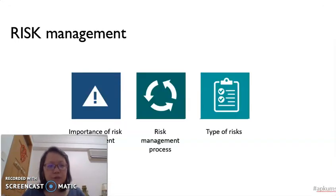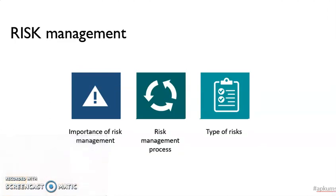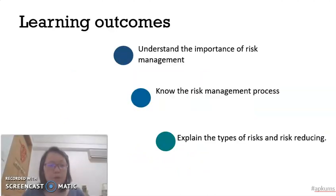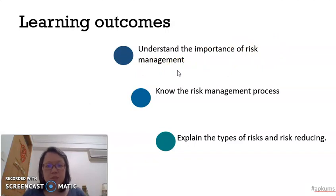I prepared this video clip to explain Unit 8: Risk Management in the course Fundamentals of Entrepreneurial Acculturation. I use this video clip to explain three subtopics of risk management: first, the importance of risk management to an organization; second, the risk management process; and third, the types of risk. The learning outcome is to understand the importance of risk management to an organization, especially a business organization, know the risk management process, and explain the types of risk and risk-reducing methods.